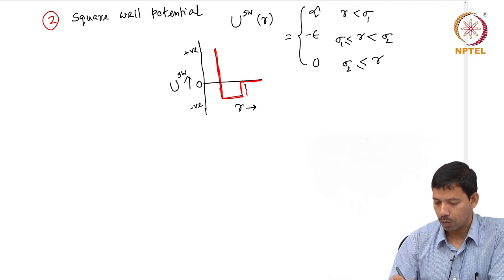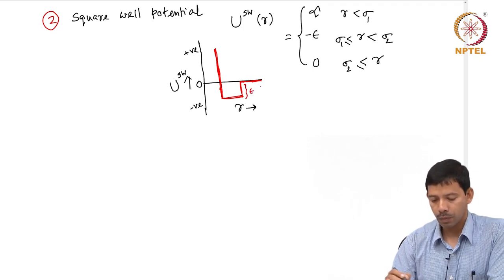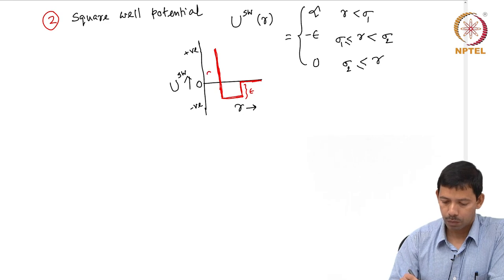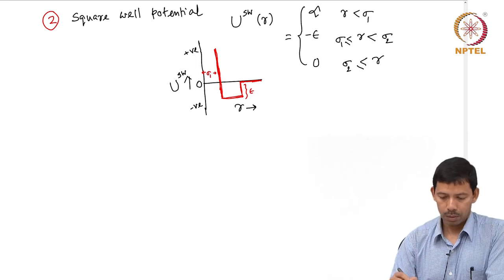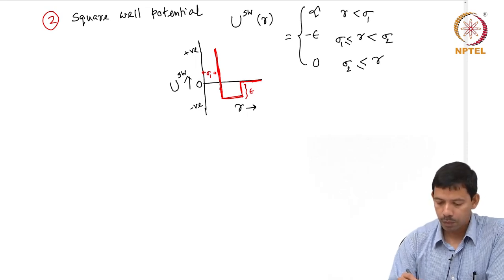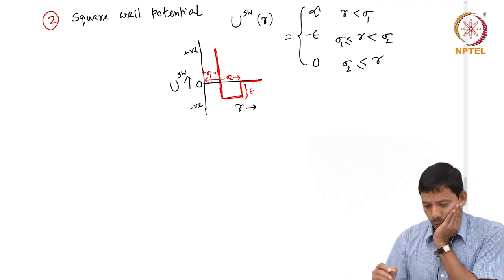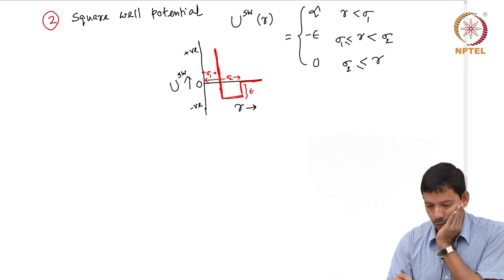This depth is epsilon, this distance is sigma_1, and sigma_2 is this whole distance out here.